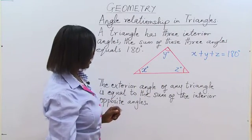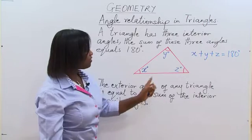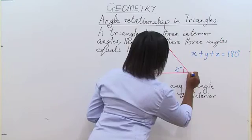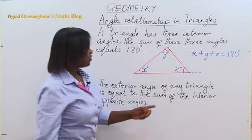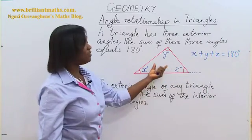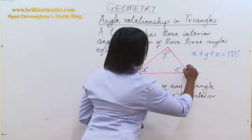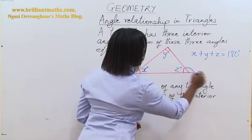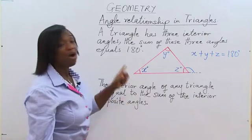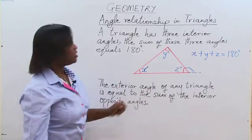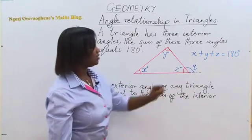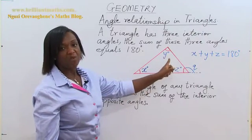The next point we want to see is the exterior angle of any triangle. What do we mean by an exterior angle? Assuming we have an angle here — that's an exterior angle of this triangle. The value of this exterior angle is equal to the sum of the interior opposite angles. So let's call this angle Q.